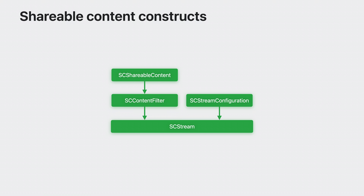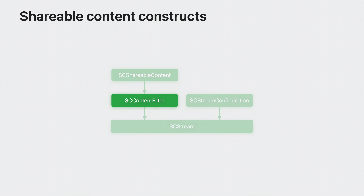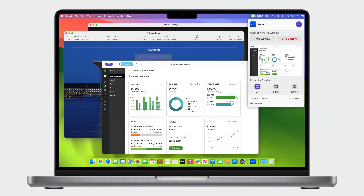These are the general constructs you use to create a stream. Currently, you call into SCShareableContent to get all available screen content that you could share, then use that to create an SCContentFilter, which determines what you're going to capture. New this year, you'll be able to get a content filter through the picker. There are two ways the picker will generate SCContentFilters: the desired content can be shared to the system picker, or the content can be selected right from the window that's open.